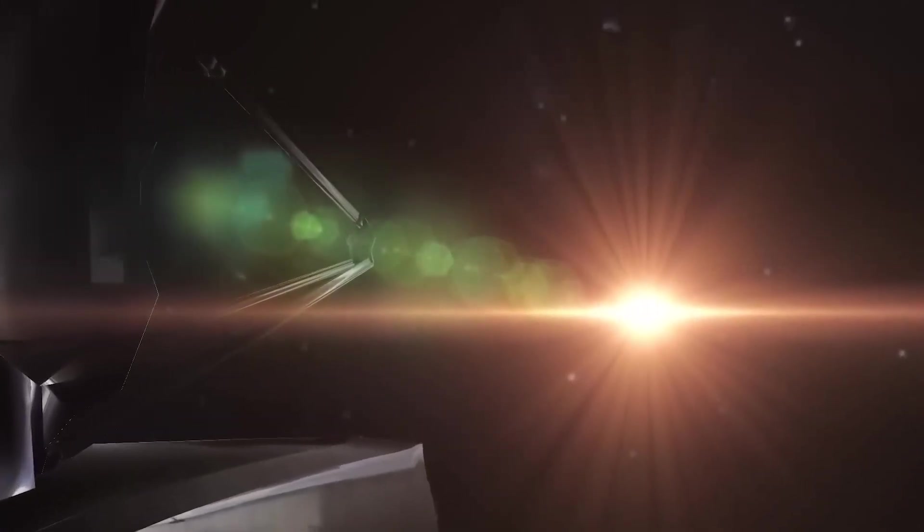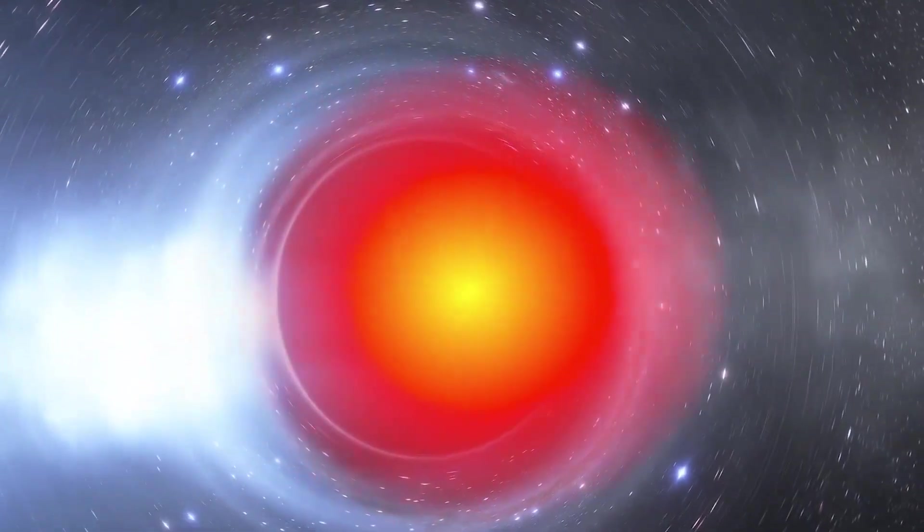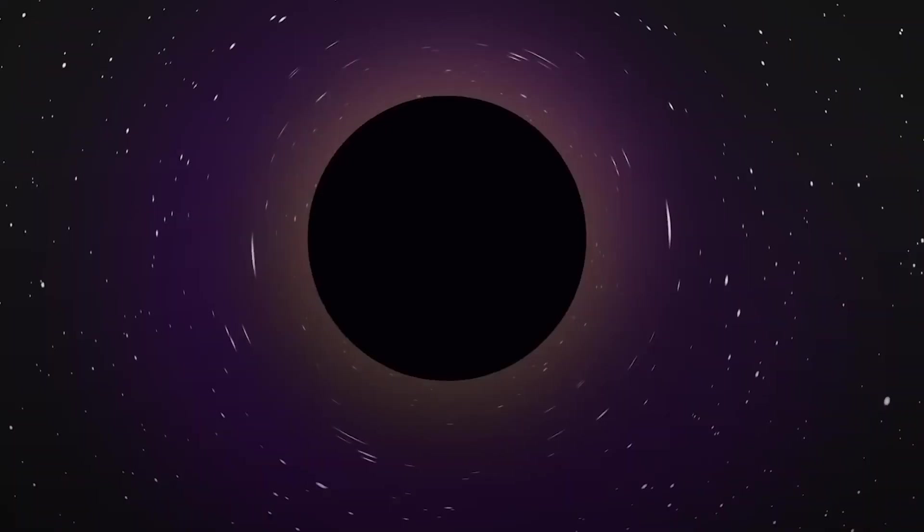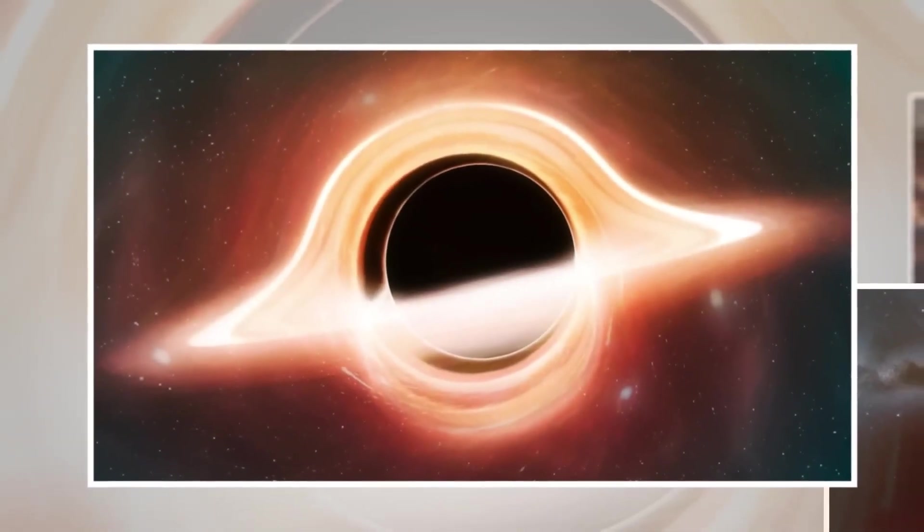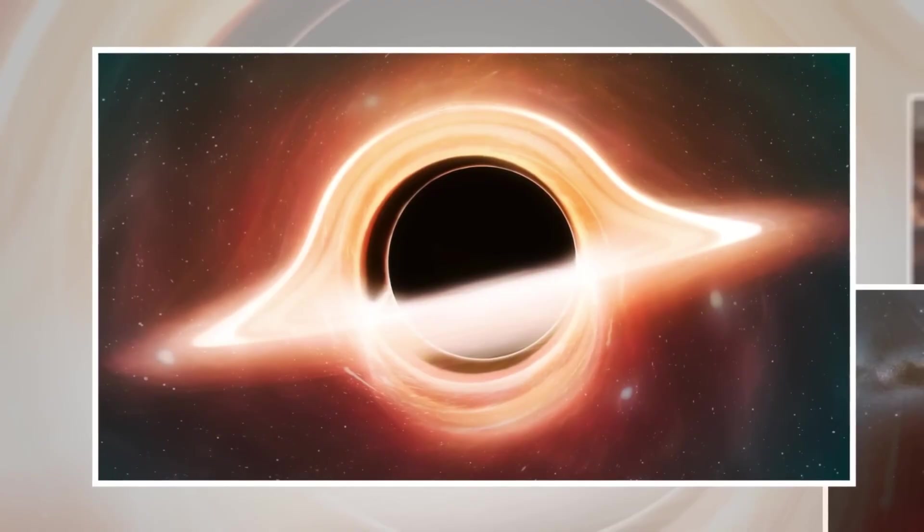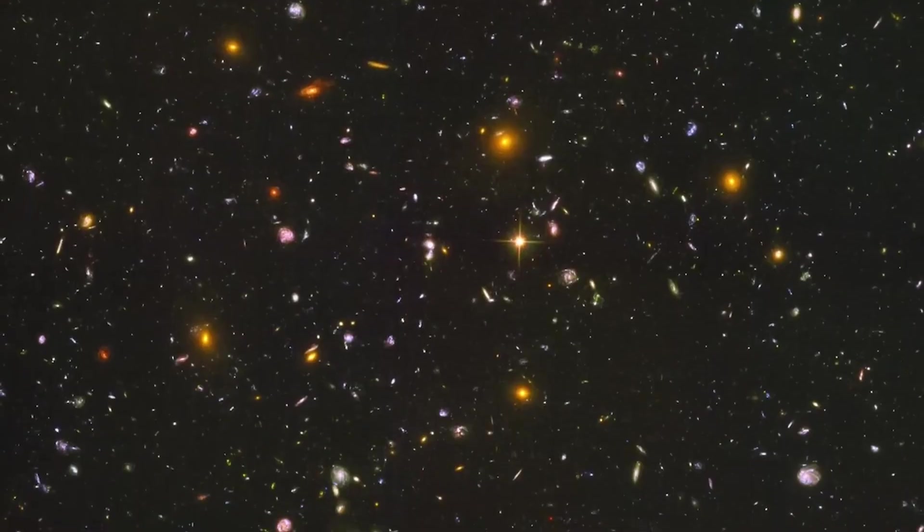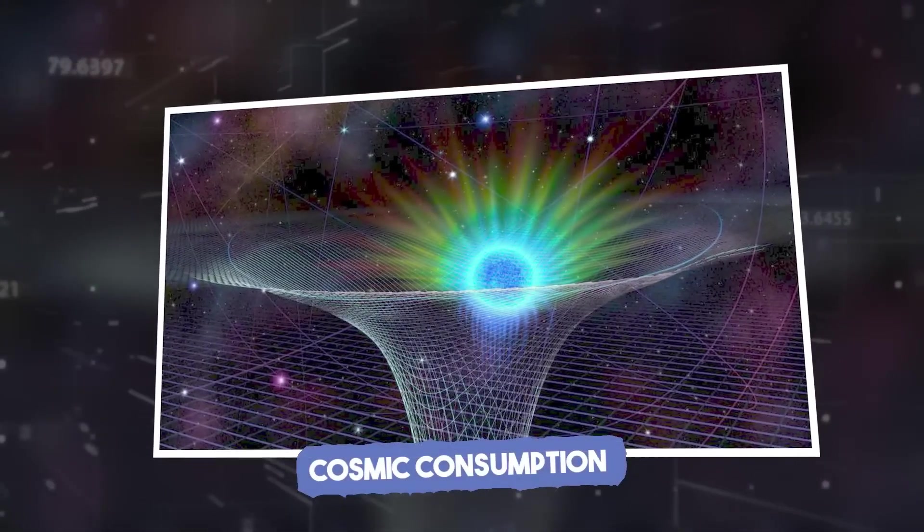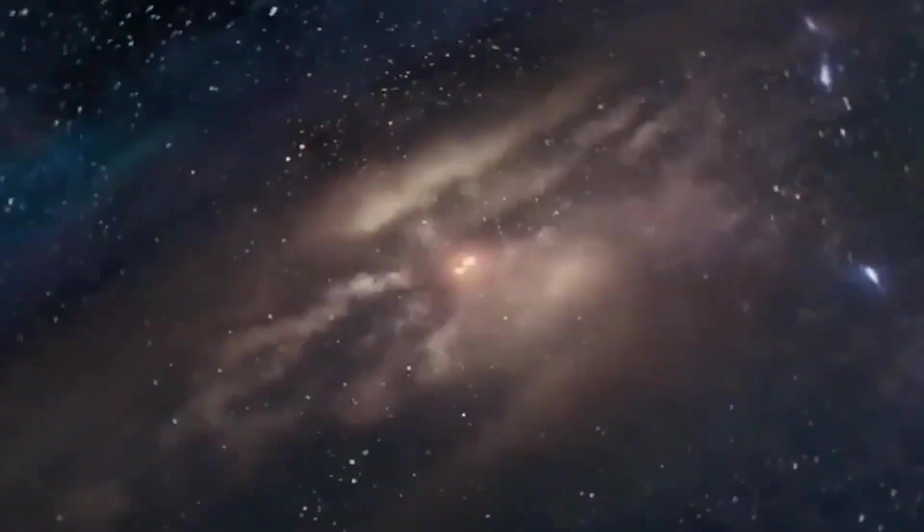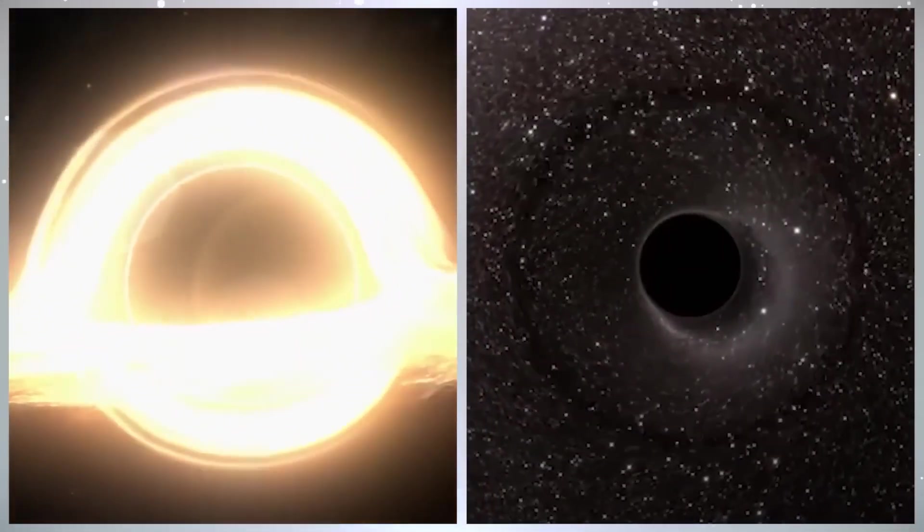And deepest of all, we finally come to the enigmatic singularity, a hypothetical point where gravity theoretically becomes infinite, and the very fabric of space-time collapses entirely. We genuinely do not know what truly exists at this central point. Is it a genuine point of infinite density, or could it be something else entirely? Some advanced theories suggest it might not be a dimensionless point at all, but rather a bizarre, tightly packed core, known as a Planck star, theoretically built from fundamental quantum threads.